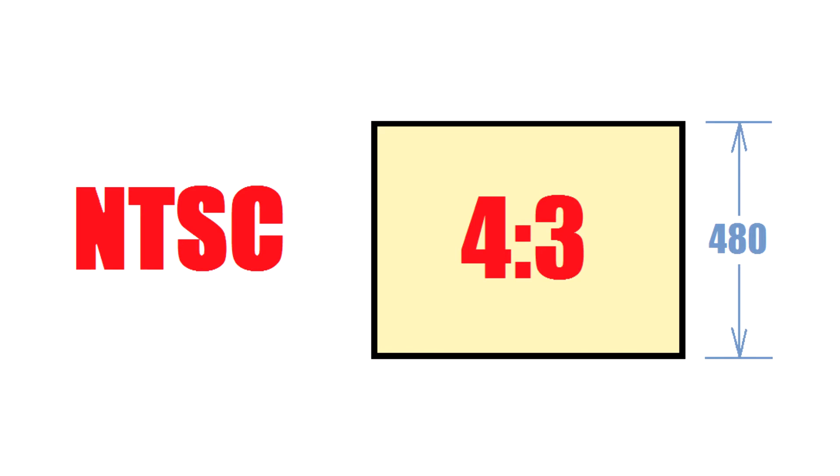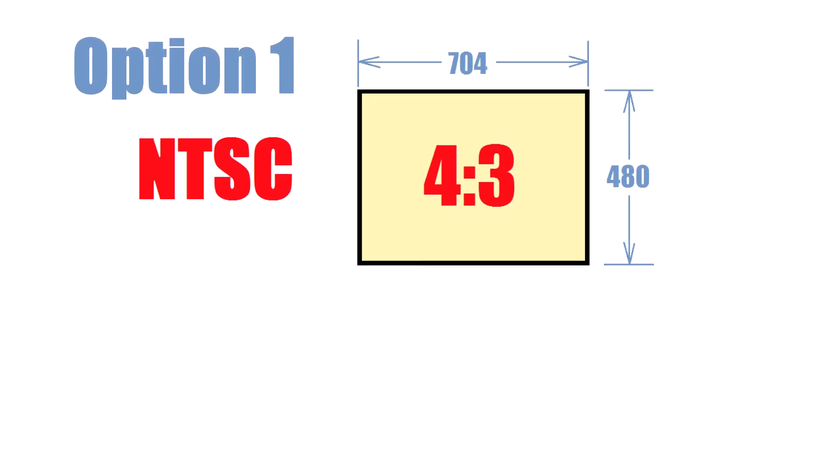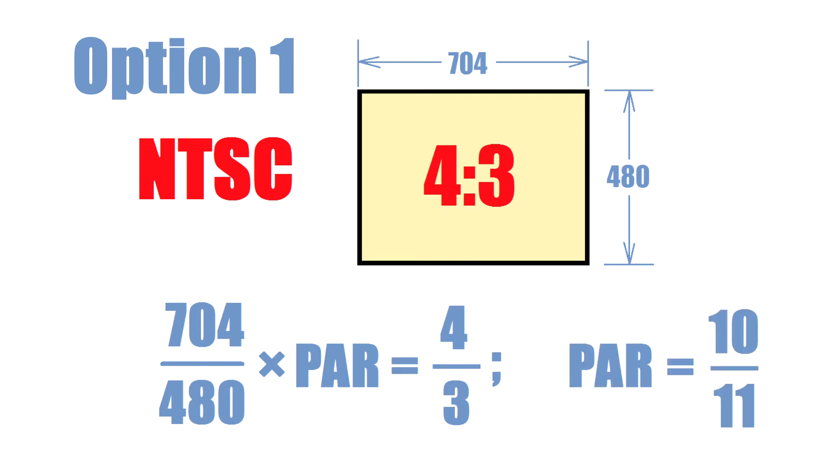Let's see how it works in case of old-school 4:3 NTSC. The first option is 704x480 frame. This is what you might see on a DVD. In this case, pixel aspect ratio comes down to 10 over 11 or 0.91 decimal, so the pixels are a little narrower than a square.